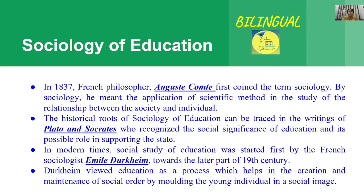If we talk about sociology of education, let us first talk about sociology itself. The French philosopher Auguste Comte, in 1837, first gave us the term 'sociology.' By sociology, he meant the application of the scientific method in the study of the relationship between society and the individual — that is, studying the relationship between society and individual beings scientifically.